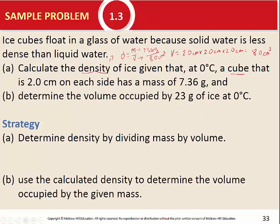Part B asks us to use that density to determine the volume occupied by 23 grams of ice, still at zero degrees Celsius. Notice we never actually used zero degrees Celsius in Part A. Sometimes numbers are given for context only — in this case the temperature is specified because density varies with temperature, but it wasn't used in our calculation. A given number does not necessarily need to go into your calculation.